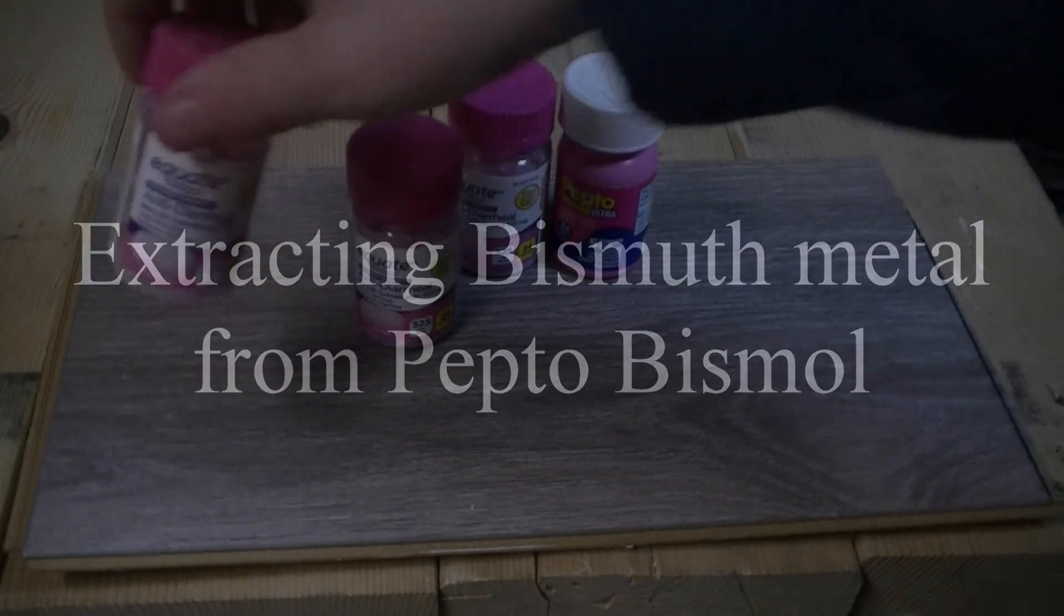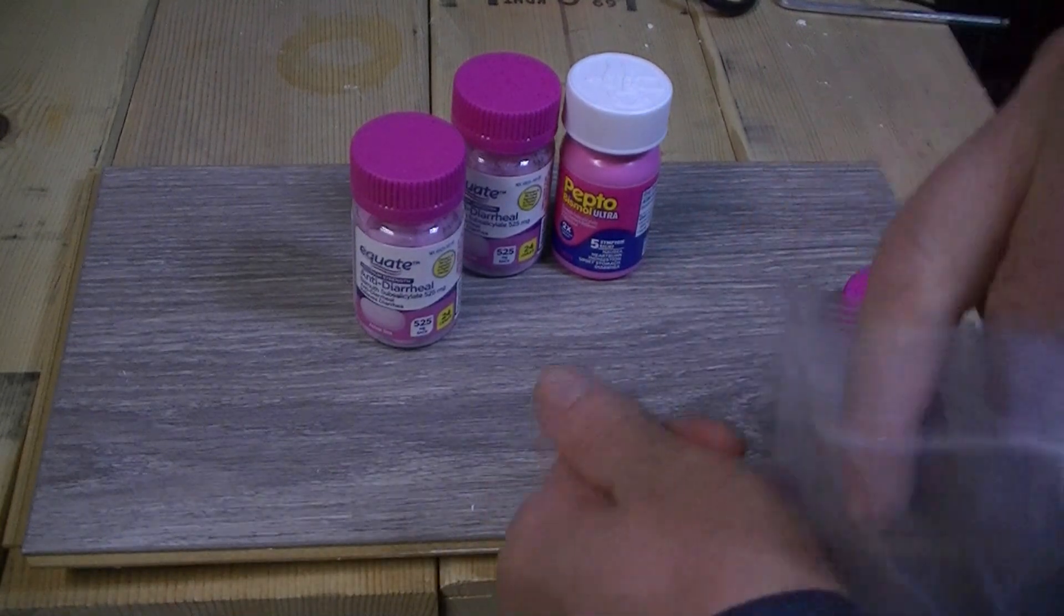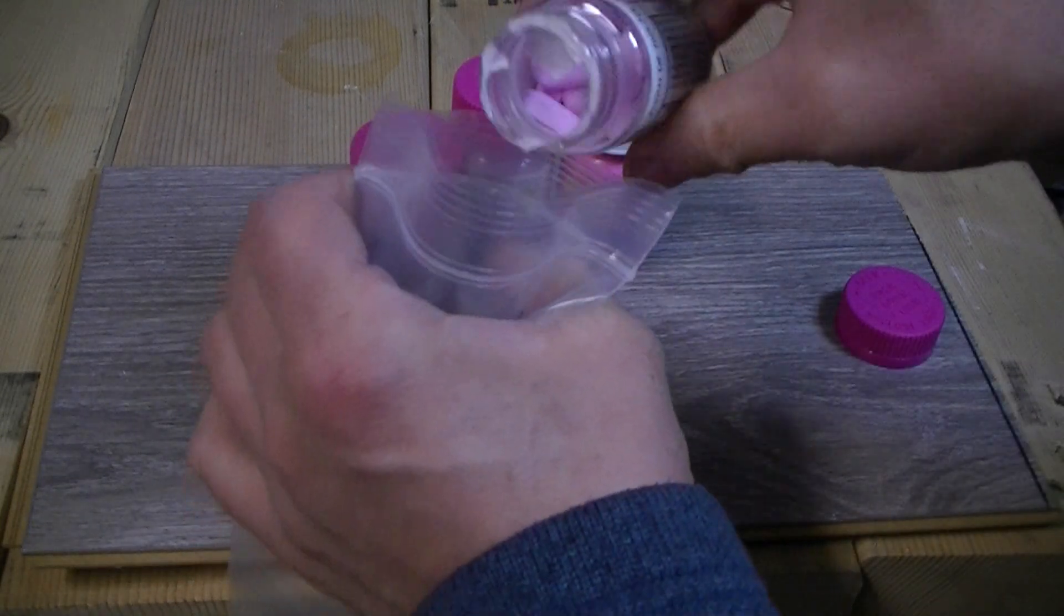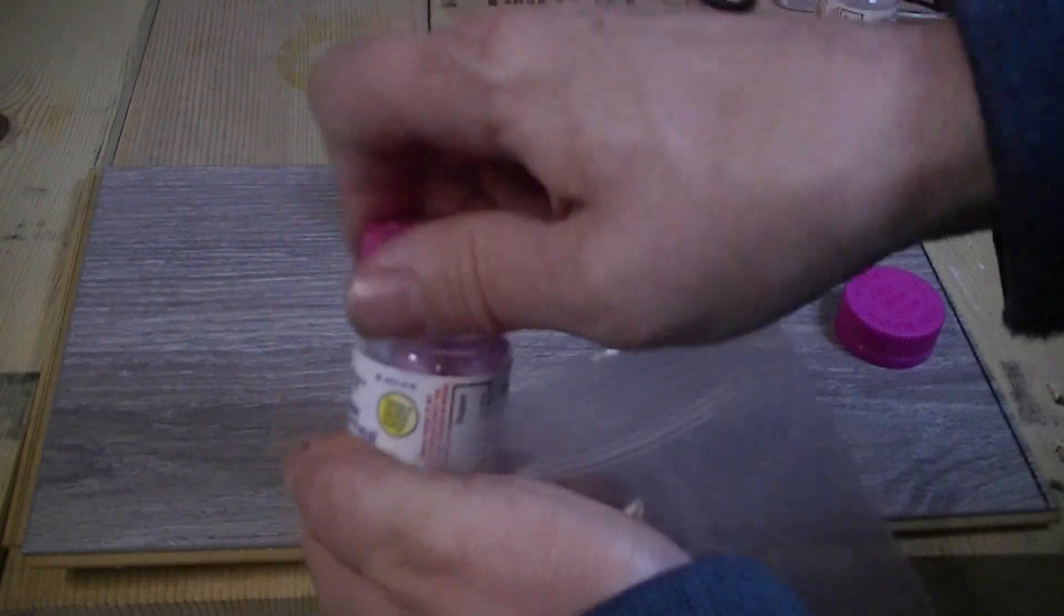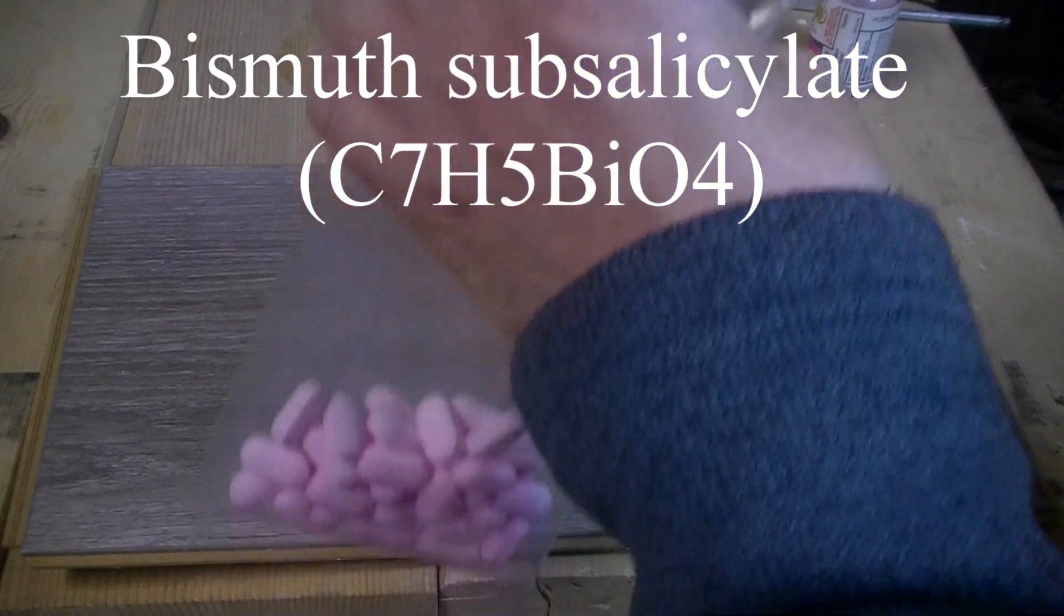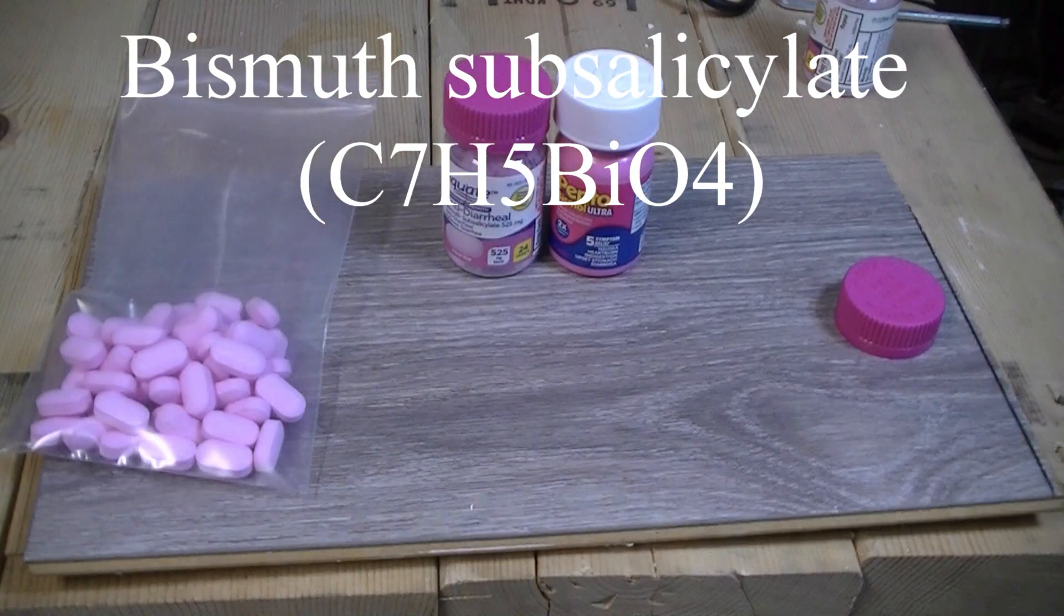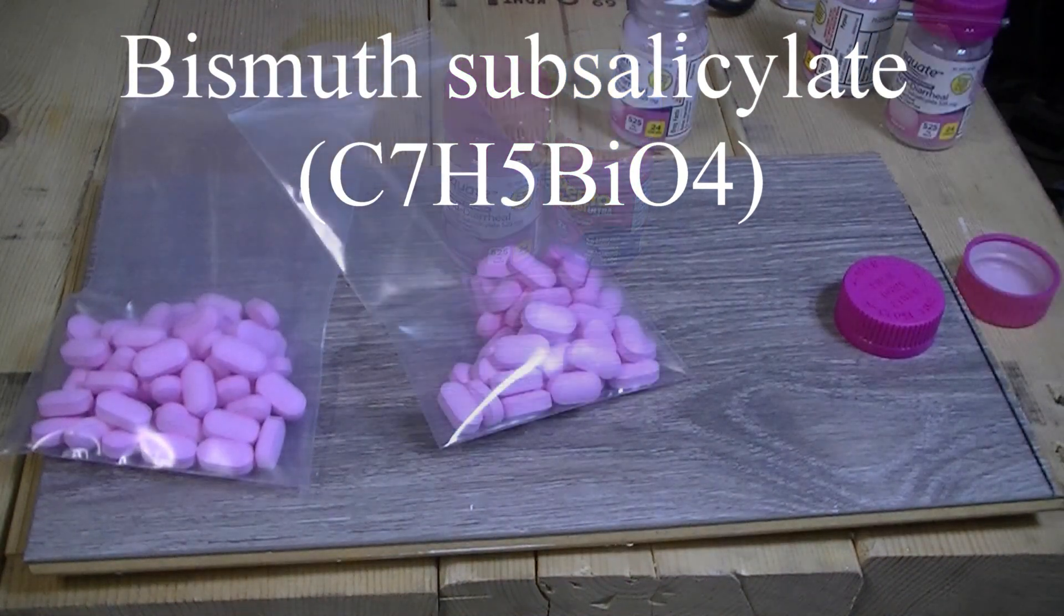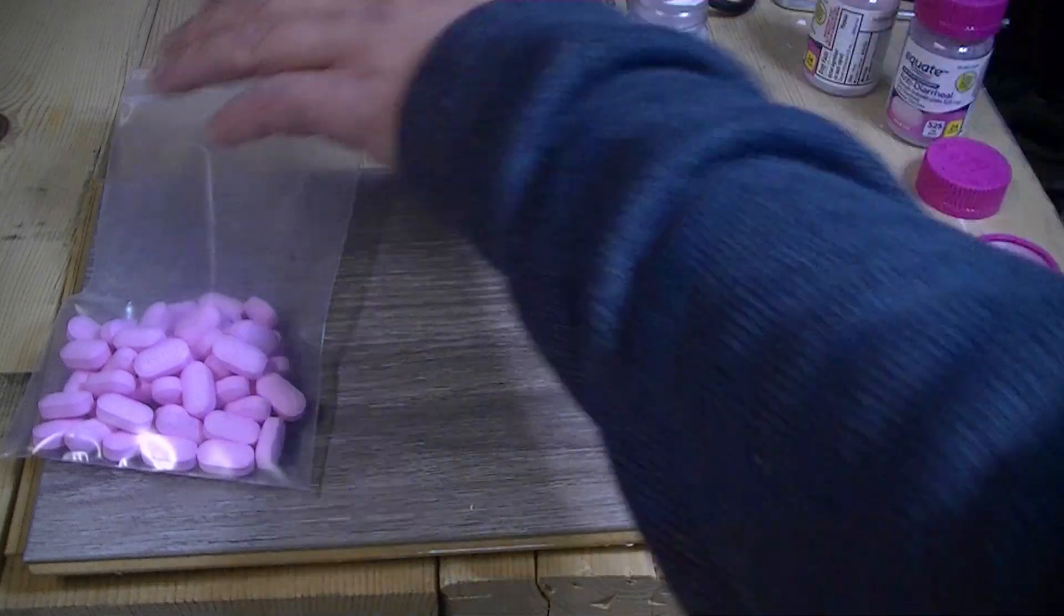Bismuth is also used in medication in the form of bismuth subsalicylate or better known as pepto-bismol. These pink tablets apparently cure diarrhea and stomach upsets. The active ingredient is a small amount of bismuth subsalicylate. I don't know how to synthesize this compound, but looking on the internet, it is possible to extract bismuth metal from this.